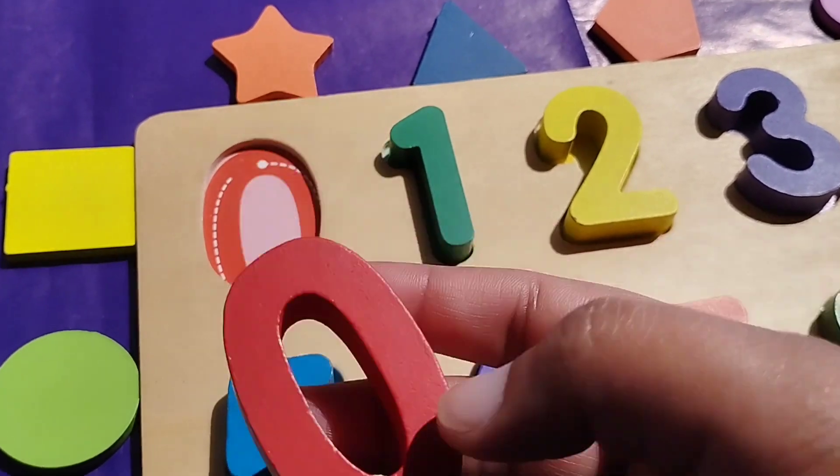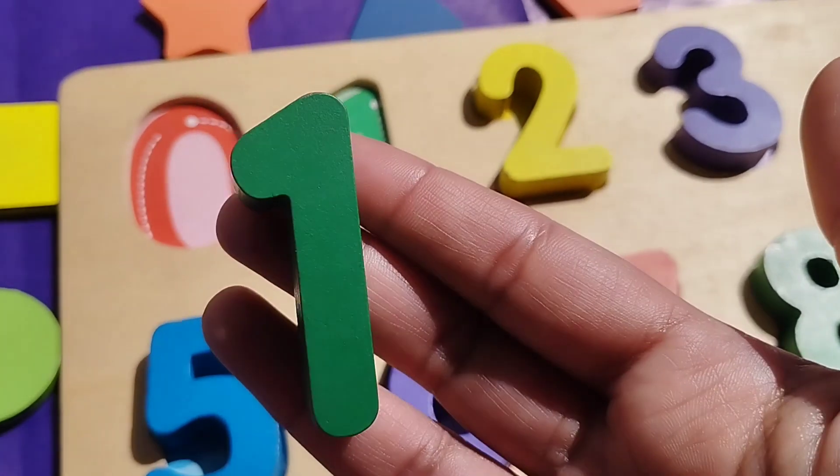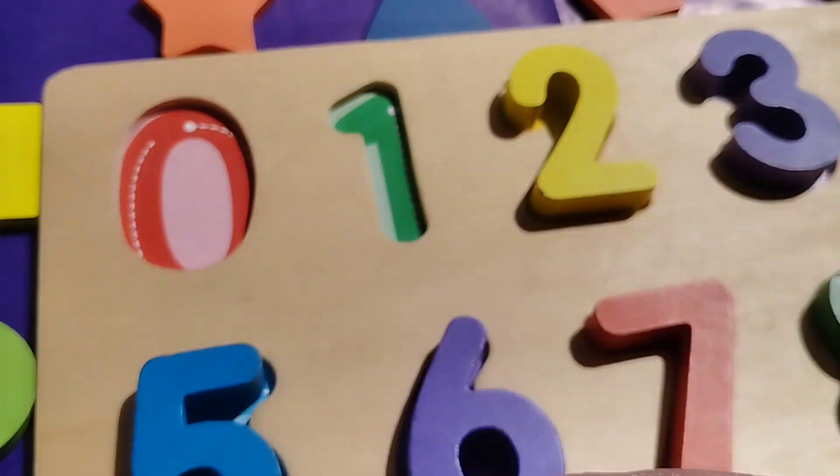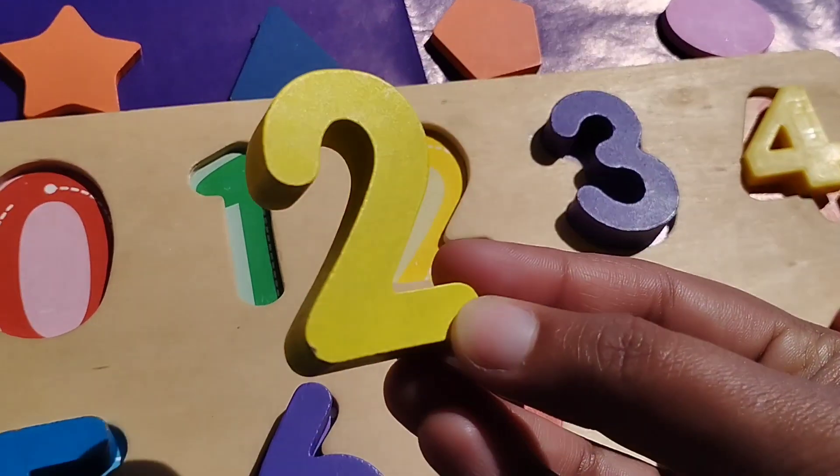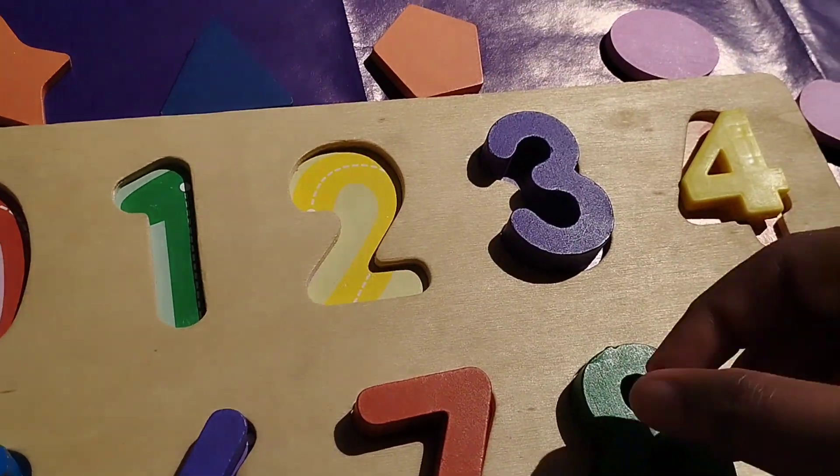Let's start. The first number is zero. One. Number one. The next number is number two. This is number two.